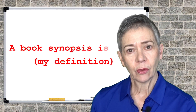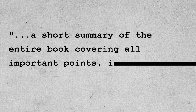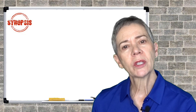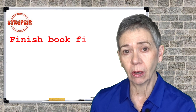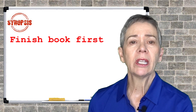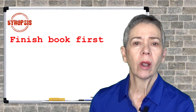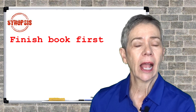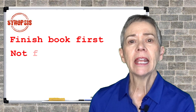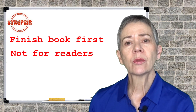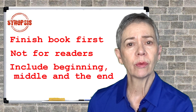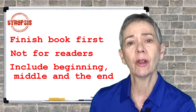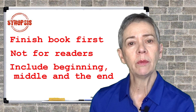Here's my definition for a book synopsis: a short summary of the entire book covering all important points, including the ending. Normally you're writing a book synopsis for a potential agent or acquisitions editor at a publishing house — not for readers. As a result, it needs to include the beginning, the middle, and the end of the book. If you were writing it for readers, you would not want the ending of a book, particularly a novel, to be included.